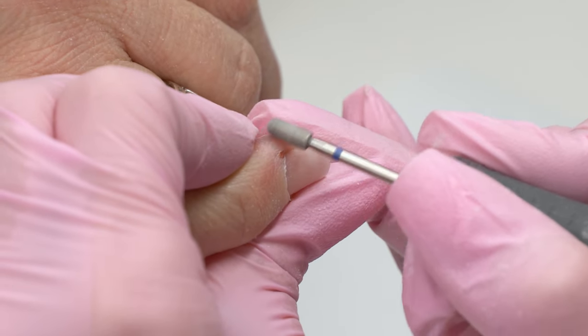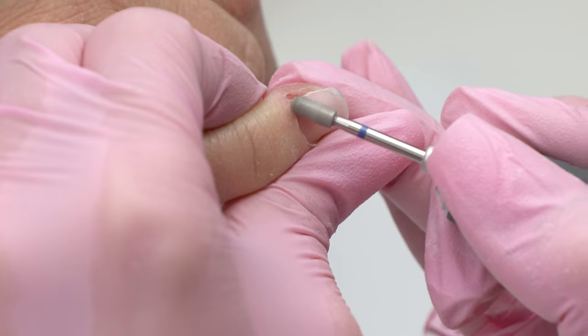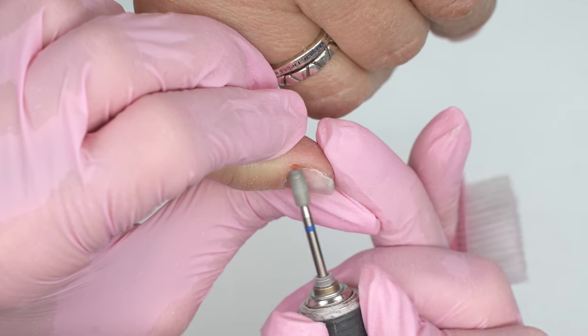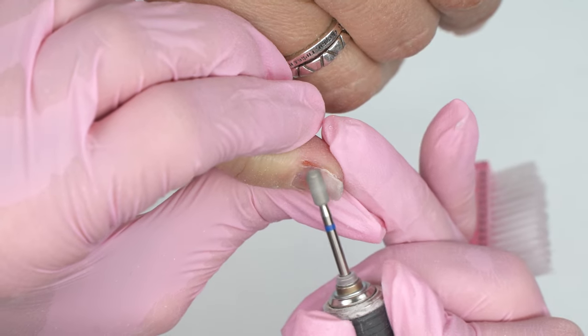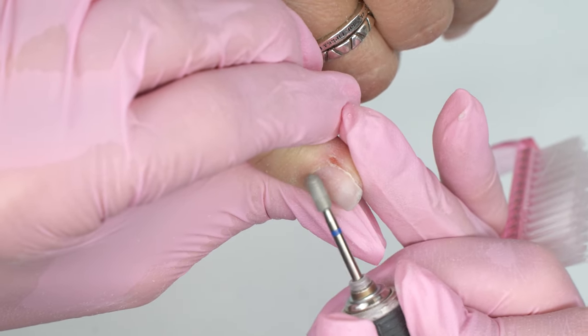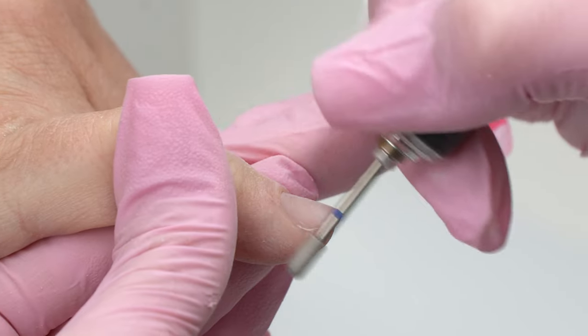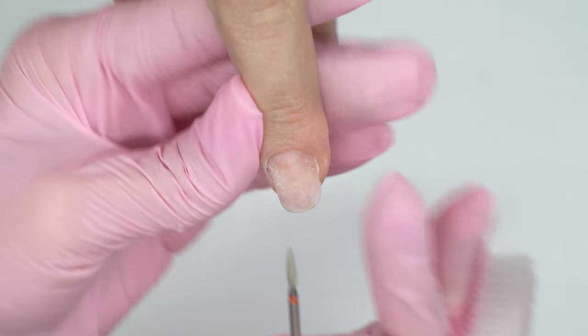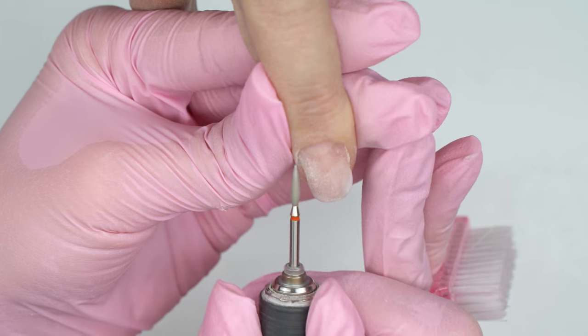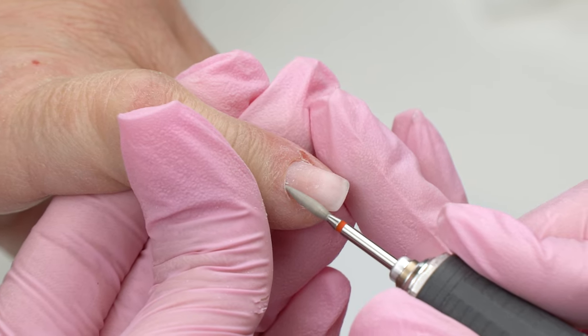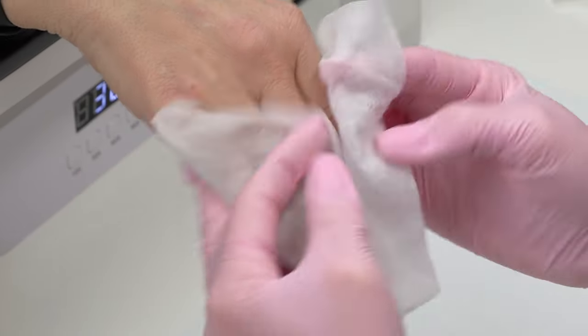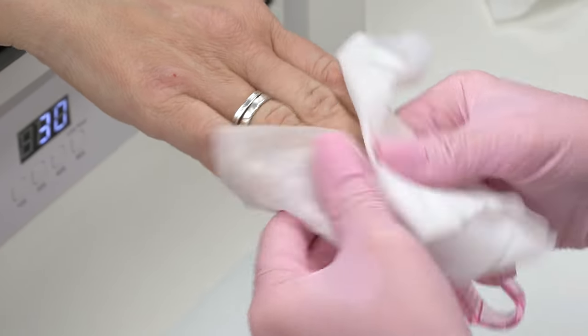In case there are big hangnails or cuts like this one, just make sure to avoid them if they are still fresh. There is a big cut here, so I just skip it and go on. We can get back to it and touch it up with the drill bit later. Now I have switched to a red drill bit to gently polish the nail fold and some of the tiny hangnails to prevent them from cracking.